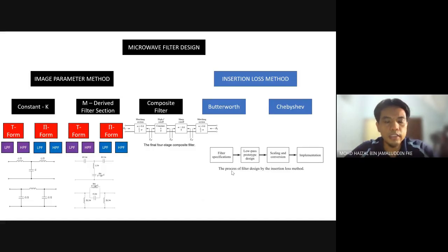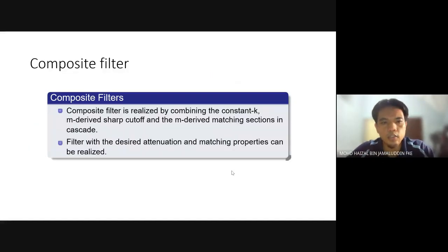Composite filter design is the third technique using a combination of constant K and M-derived filter sections. Composite filter is realized by combining the constant K, M-derived sharp cutoff, and the M-derived matching section in cascade. Filters with the desired attenuation and matching properties can be realized.